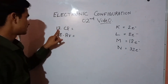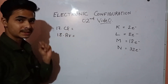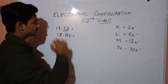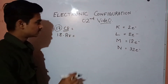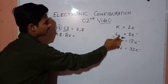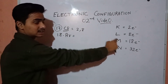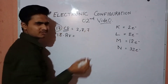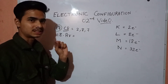The 17th element is chlorine — remember its symbol. How many electrons are in chlorine? 17 electrons. The first 2 go to the K shell, 8 go to the L shell, and the remaining 7 electrons go to the M shell. So the electronic configuration of chlorine is 2, 8, 7.